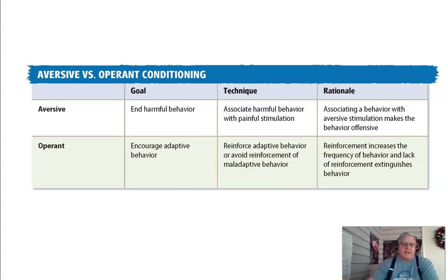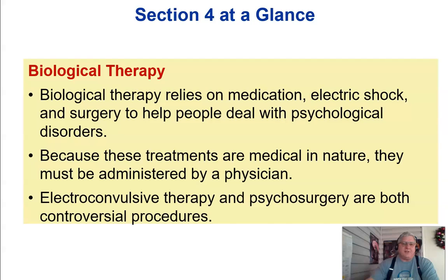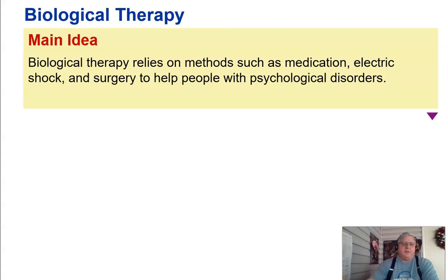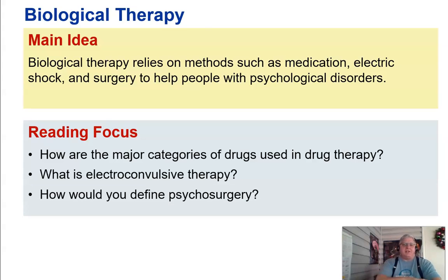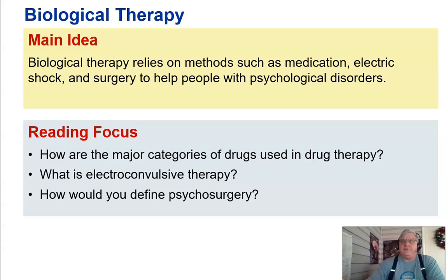Operant conditioning encourages adaptive behavior by reinforcing it or avoiding reinforcement of maladaptive behavior — reinforcement increases behavior while lack of reinforcement extinguishes it. Behavior therapy tends to be somewhat more effective overall than psychoanalysis or person-centered therapy and can bring about lasting results in just a few months. Cognitive behavior therapy attempts to change the way a person both thinks and behaves. Biological therapy relies on medication, electric shock, and surgery to help people deal with psychological disorders, and because these treatments are medical in nature, they must be administered by a physician. What you should know: the major drug categories, electroconvulsive therapy, and psychosurgery.